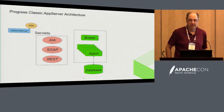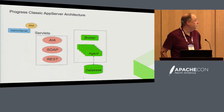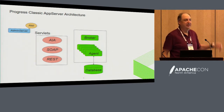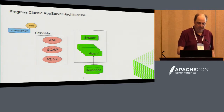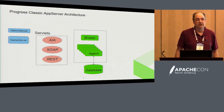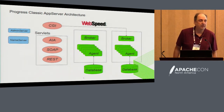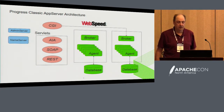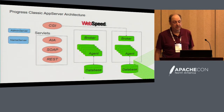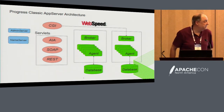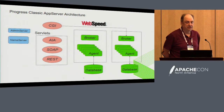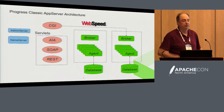We also had some ancillary processes. We had an admin server required for our app server — it manages starting, stopping, and all those other things, using RMI to communicate with everything, which is one of the reasons why we moved away from this. We also created a name server using UDP that allows clients to find where the app server is located based on an app service name. And we also had a web application server called WebSpeed that predated our regular application server. It uses the same architecture but a completely different agent process — whereas our normal app server is an RPC-based model, this one is a streaming-based model designed for the web.